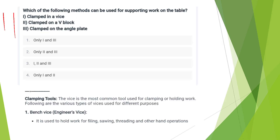The following methods can be used for supporting work on the table: clamping tool, clamped on the V-block, clamped on the angle plate. The answer is Option C — all three: 1, 2, and 3. Clamping tools most commonly use a vise — bench vise or engineer's vise — used to hold work for filing, sawing, threading, and other hand operations.